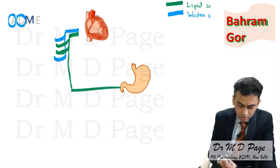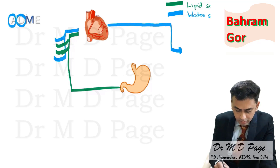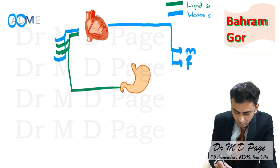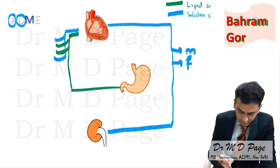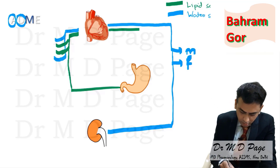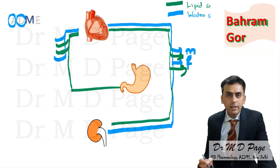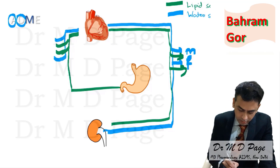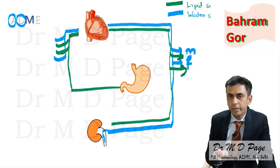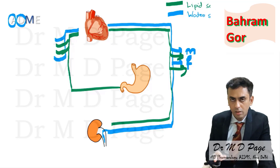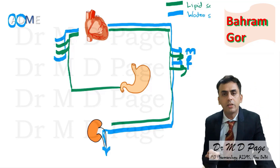Once into systemic circulation, the drug gets distributed to various organs like the heart, skeletal muscle, fat, and kidney. At the kidney, water soluble drugs get filtered into the renal tubules, and because they are water soluble, they do not get reabsorbed — they cannot cross the lipid membrane — hence they get excreted.